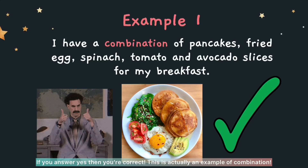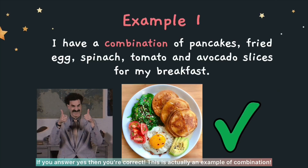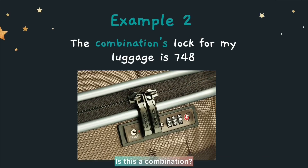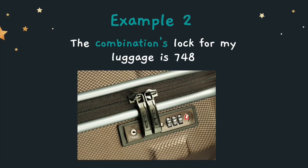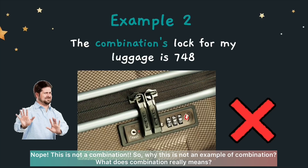If you answer yes, then you are correct. This is actually an example of combination. Next, for the second example, the combination slot for my luggage is 748. Is this a combination? Let's have a moment to think about it. Nope, this is not a combination. So why is this not an example of combination? What does combination really mean?